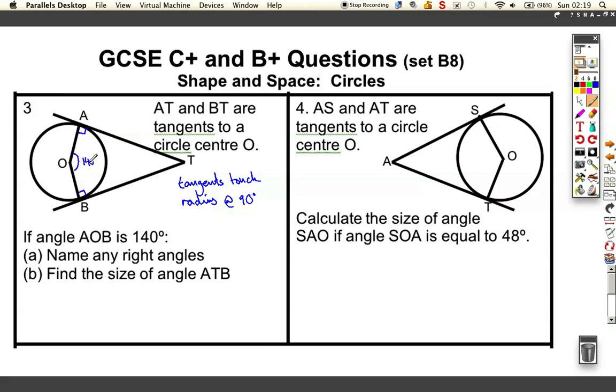Name any right angles. Well, I've just said that tangents touch at 90 degrees. So OAT travelling from O to A to T is a right angle, equal to 90 degrees. And OBT from O to B to T is also 90 degrees. So that's part a.